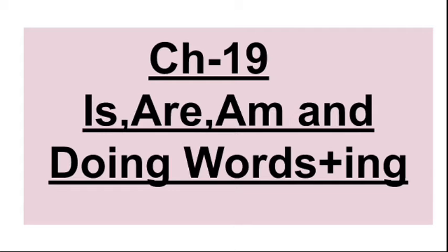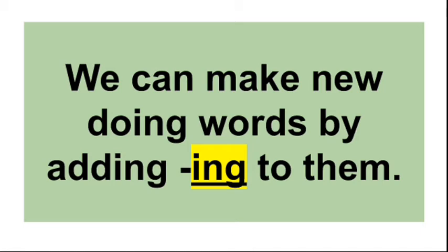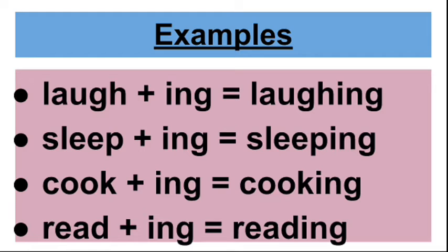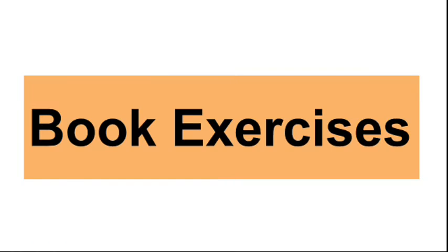We can make new doing words by adding ing to them. Like: laugh plus ing is laughing, sleep plus ing is sleeping, cook plus ing is cooking, read plus ing is reading. It's very easy — simply add ing to the doing word.